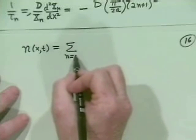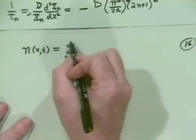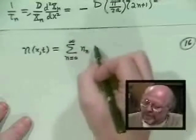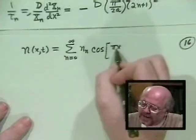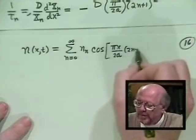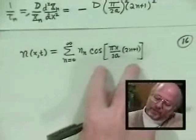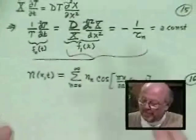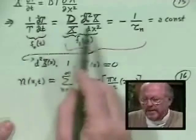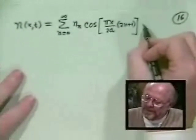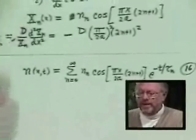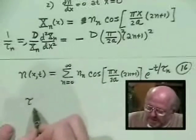Constructing the full solution, n(x,t) is a sum over all modes of n_n times cosine of (2n+1) pi x over 2a times the temporal factor. The temporal equation one over T times dT/dt equals minus one over tau_n gives e to the minus t over tau_n. So tau_n equals a squared over D divided by (pi/2)² times (2n+1)².